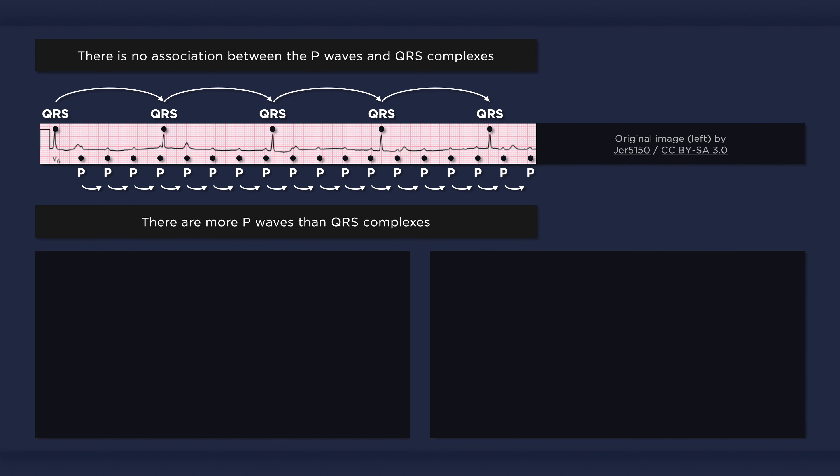Essentially, the ECG has two regular rhythms. The P waves are just marching along independently, and the QRS complexes emerge when they can no longer wait for an electrical impulse to come through. There is no PR interval — just a random space between asynchronous P waves and QRS complexes.